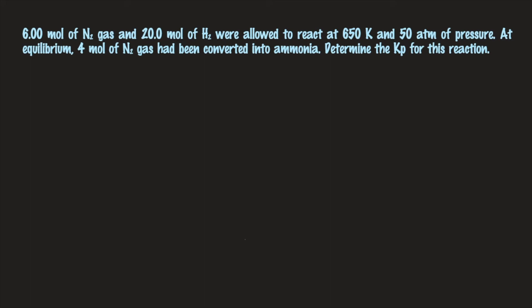For question 6, the first step is to write the balanced equation. Nitrogen reacts with hydrogen to produce ammonia (NH₃). With 3 hydrogens on one side and 2 on the other, placing 3 before H₂ and 2 before NH₃ balances the hydrogens. Checking nitrogen: 2 on the reactant side and 2 at the product side — the equation N₂ + 3H₂ → 2NH₃ is balanced.